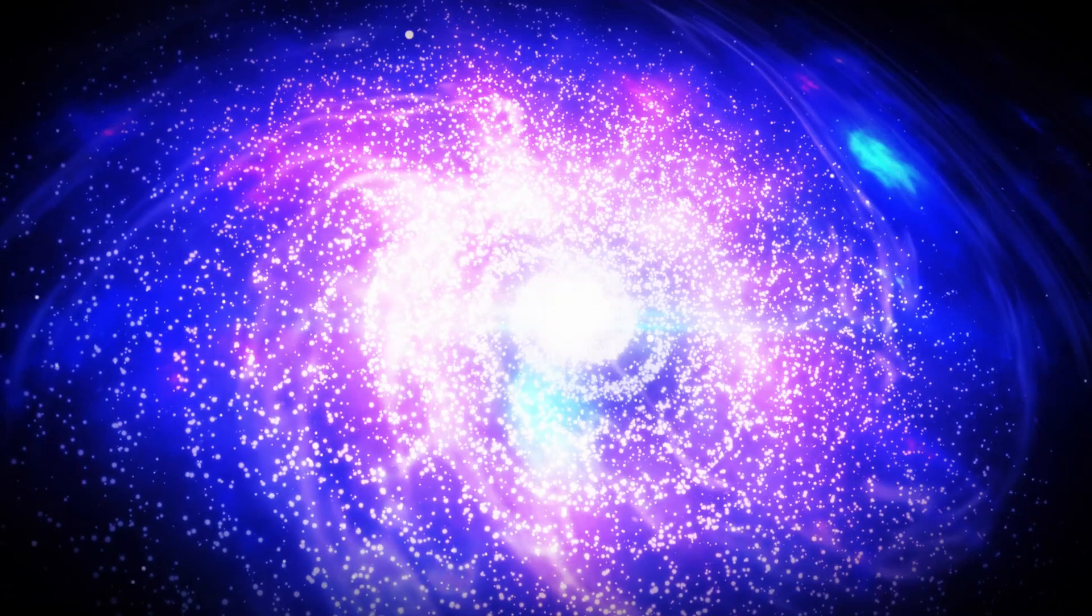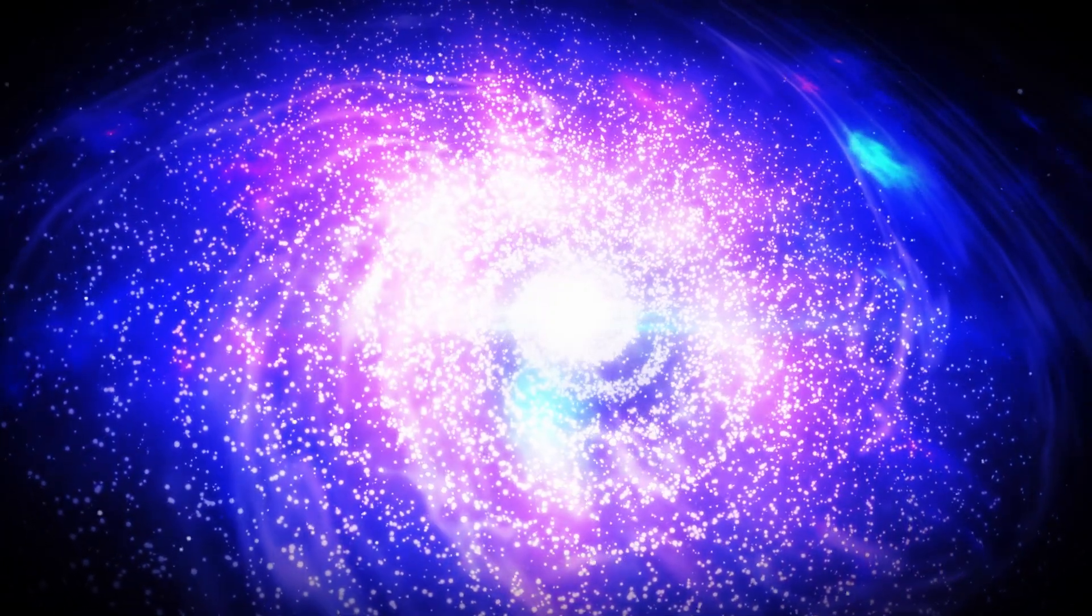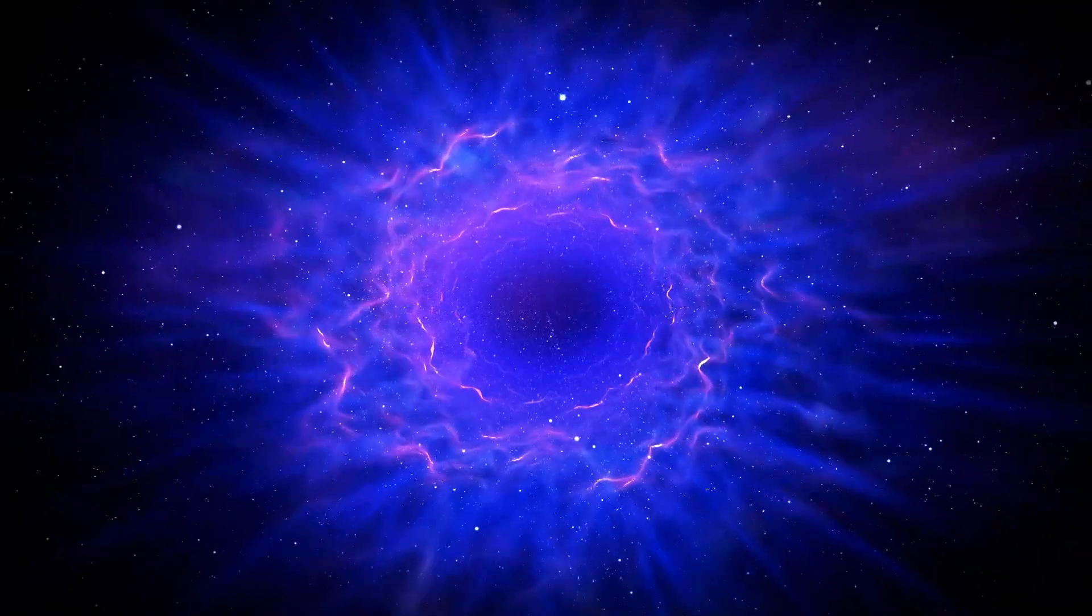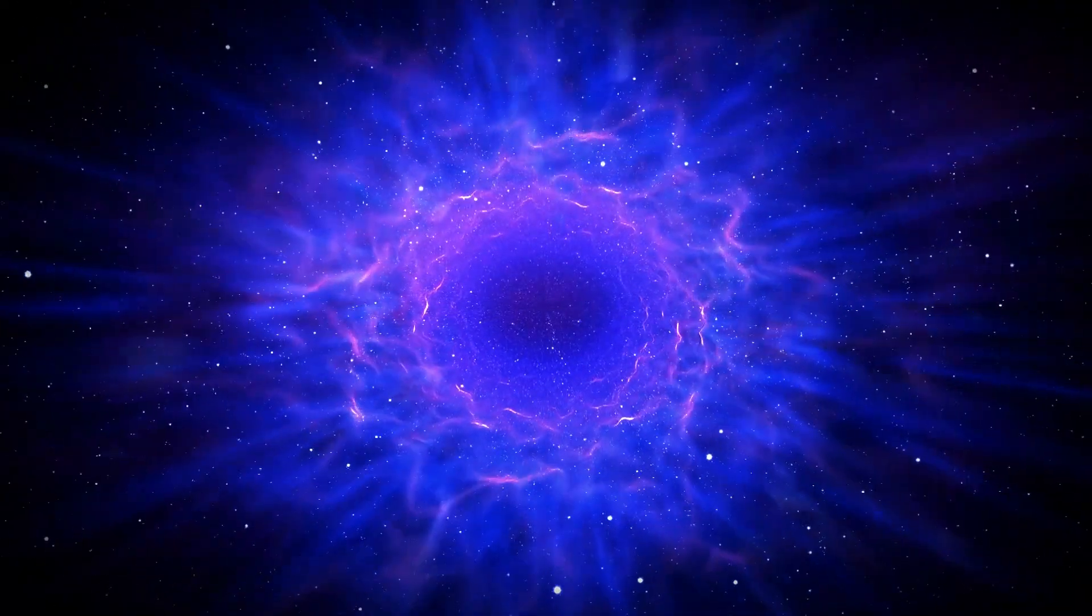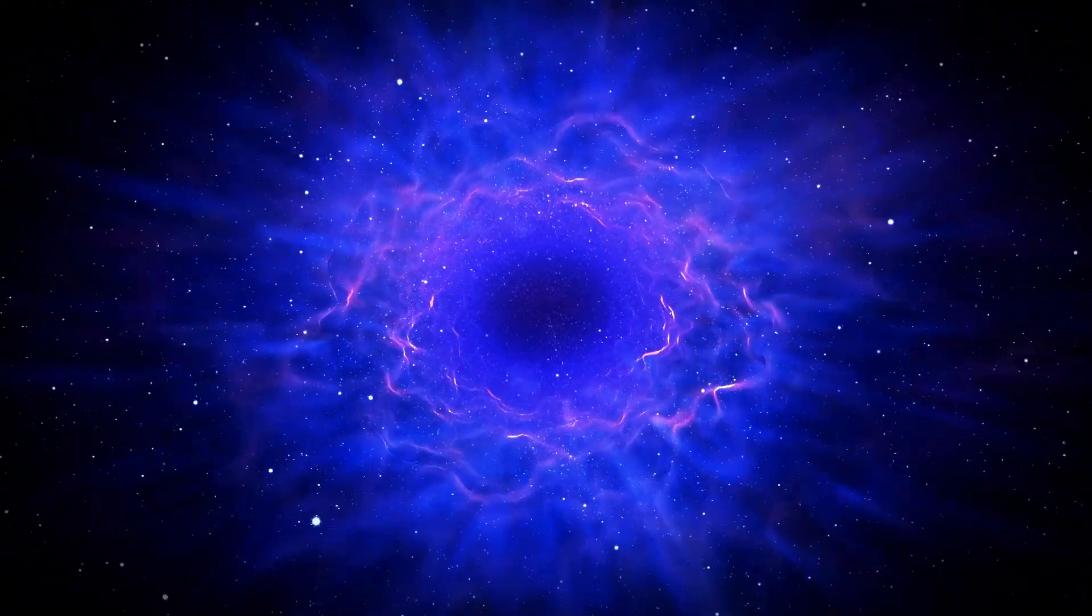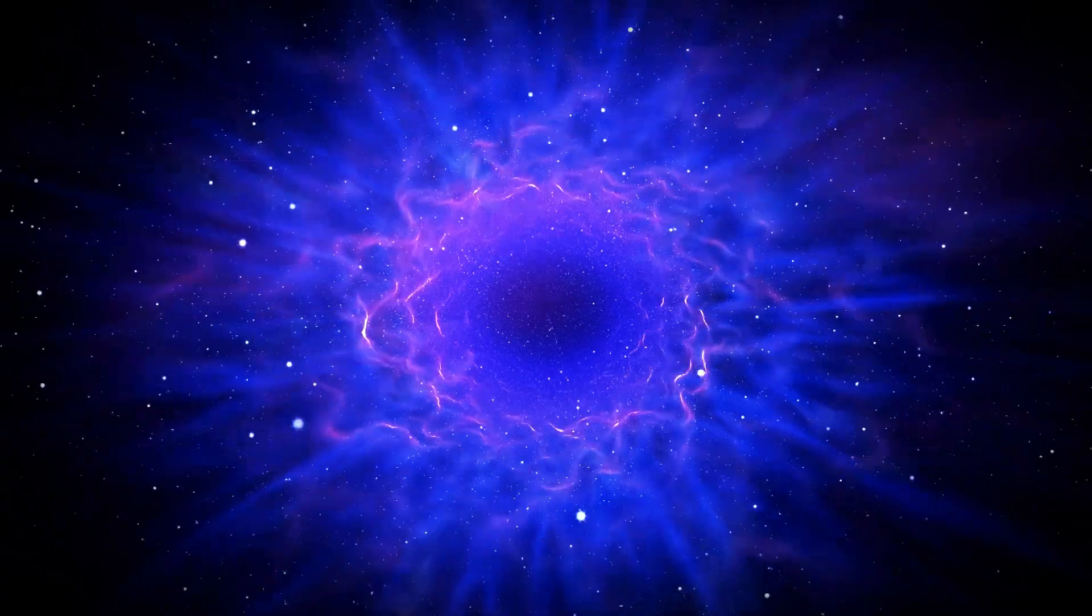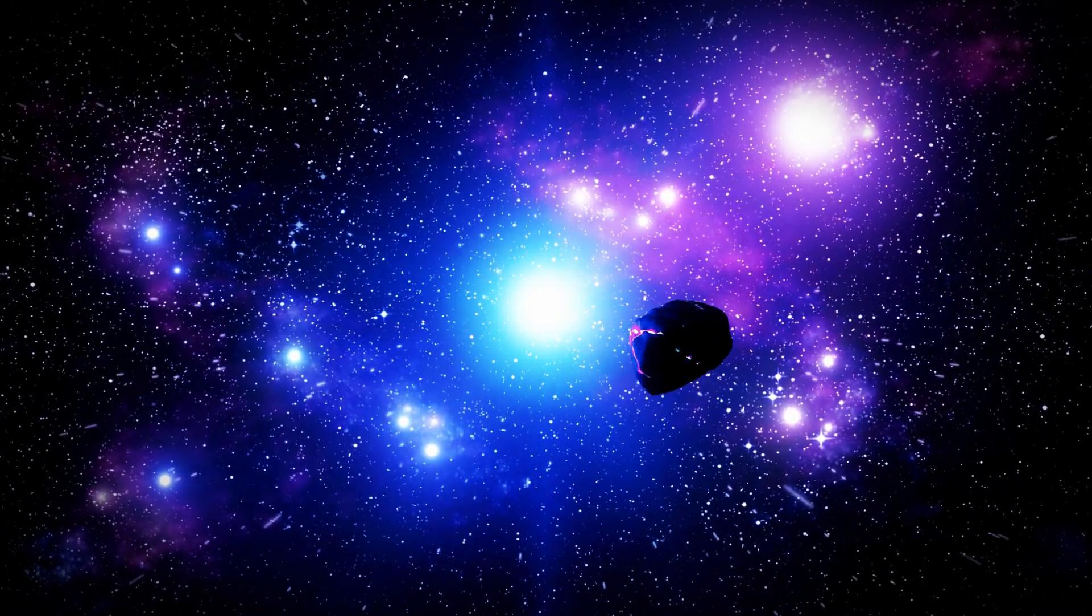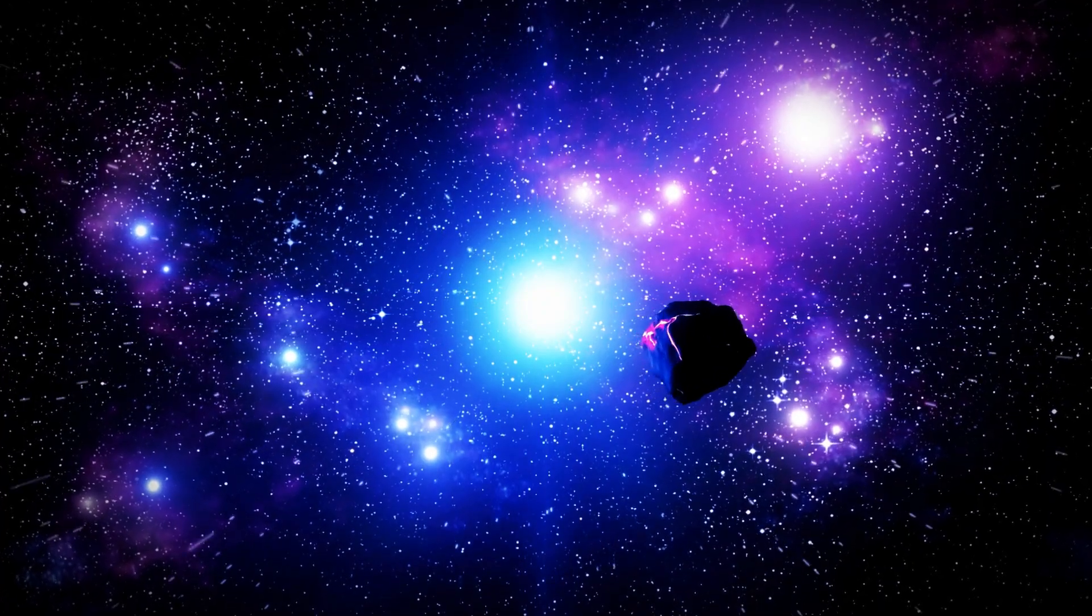Galaxies don't start out this way. In their early stages, they appear as chaotic, irregular clumps of stars. Over time, these clumps gradually flatten into disks, and only after several billion years do the iconic spiral arms and the central bulge begin to emerge. Or at least, that was the prevailing theory, until now.